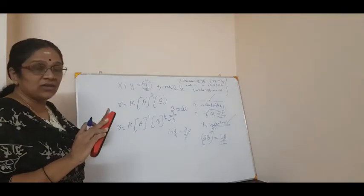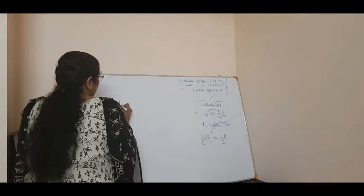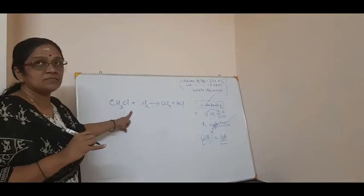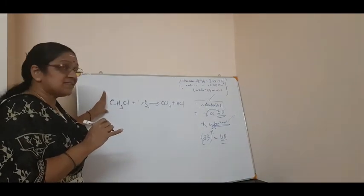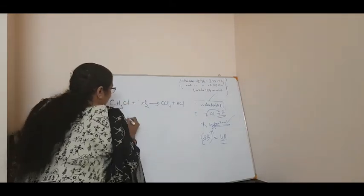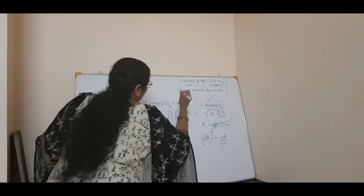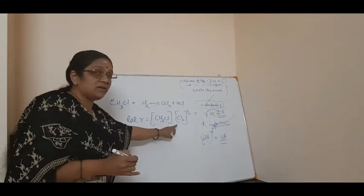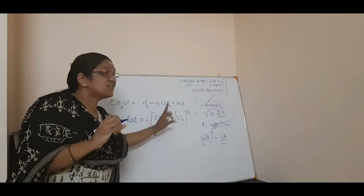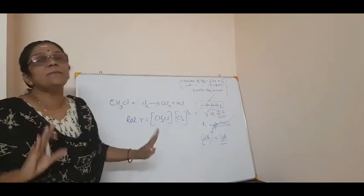Let me give one more example to make it clearer. In the case of the reaction CH₃Cl plus Cl₂ giving CCl₄ plus HCl, experimentally it is proven that the rate of reaction R is equal to K into the concentration of CH₃Cl and the concentration of chlorine raised to half. The stoichiometry here is 1 and 1, but the rate law shows CH₃Cl raised to 1 and Cl₂ raised to 1/2 — showing that the rate law is only an experimental quantity.